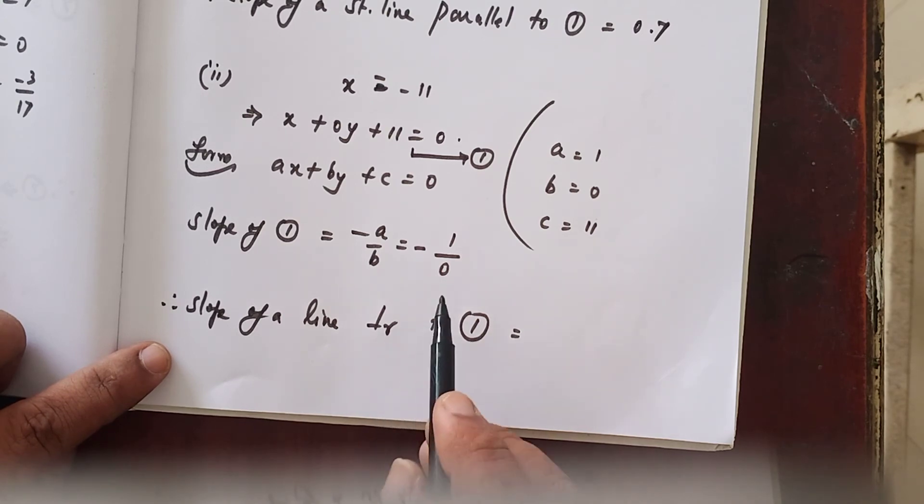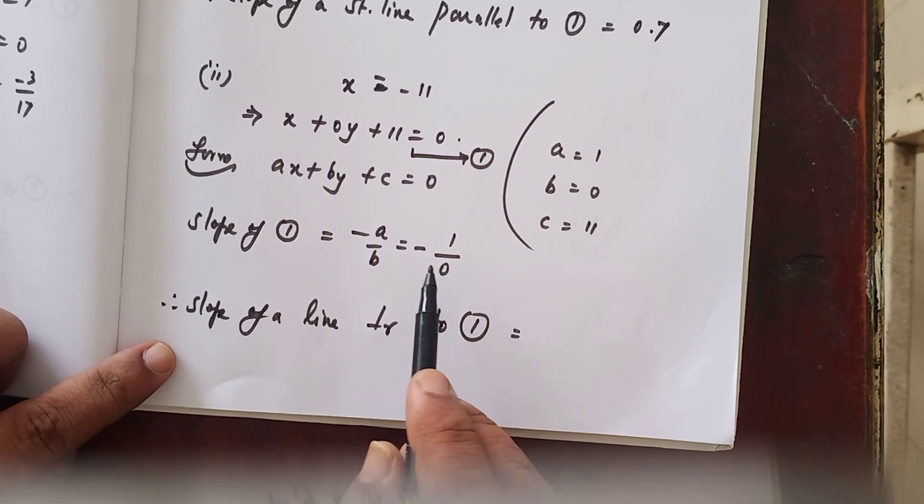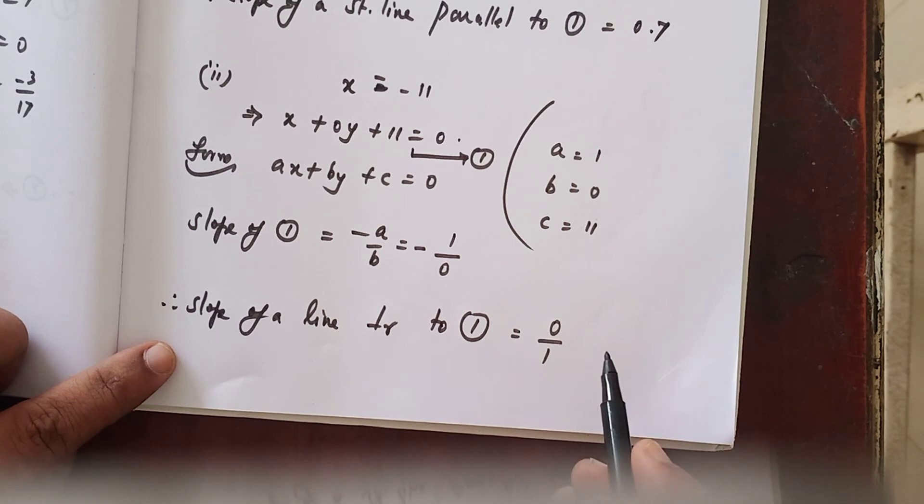Since it is perpendicular, you have to write the negative reciprocal of the given line slope. The given line slope is minus 1 by 0. Negative reciprocal: minus becomes plus, 1 by 0, reciprocal is 0 by 1. 0 by anything is 0. That is all. So, slope of a line perpendicular to the given line is 0.